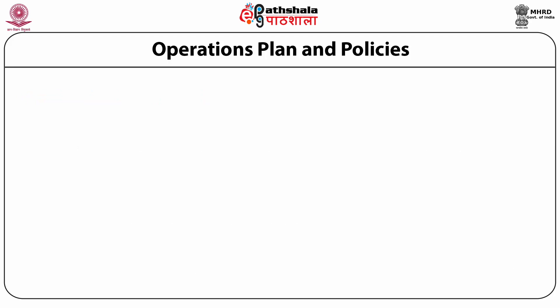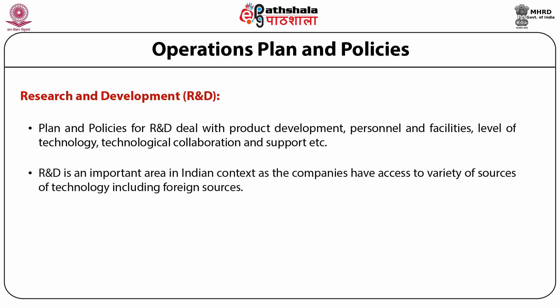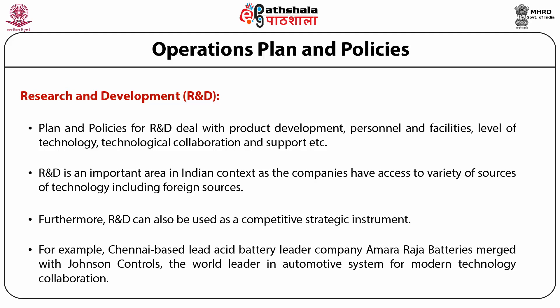Finally, we also have to decide upon research and development plans and policies. Plans and policies related to R&D basically deal with product development, personnel and facilities, the level of technology which needs to be adopted, and whether there is a need for any collaboration or support. R&D is an important area as companies have access to a variety of sources of technology including foreign sources. R&D can be used as a source of comparative advantage. For example, Amara Raja Batteries, a Chennai-based lead acid battery company, merged with Johnson Controls, the world leader in automotive systems, for modern technology collaboration. An appropriate R&D plan can help the firm not only to differentiate from competitors but can be a key source of value in the long run.